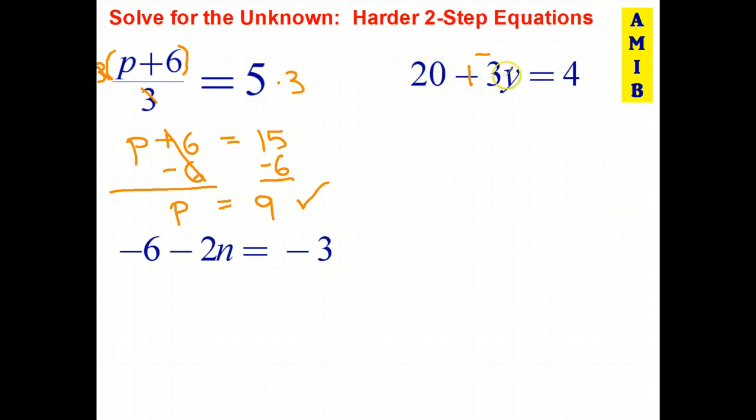Now that we're adding order doesn't make any difference. So I've got negative three y plus 20. I can start by subtracting 20 from both sides. 20 take 20 is zero. So that cancels out. And that leaves me with just negative three y.